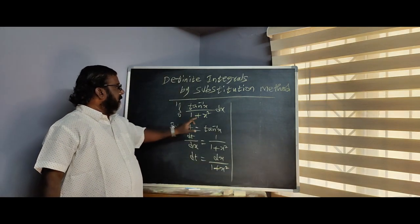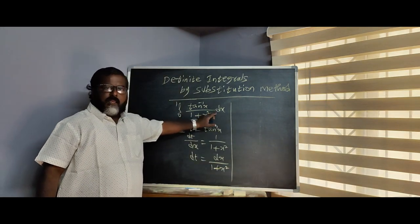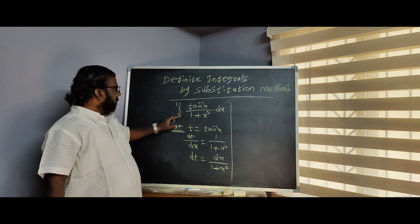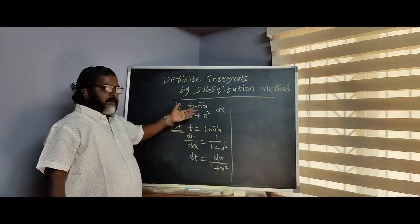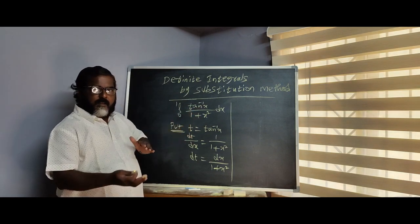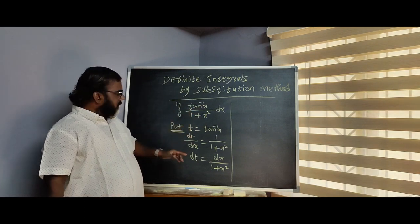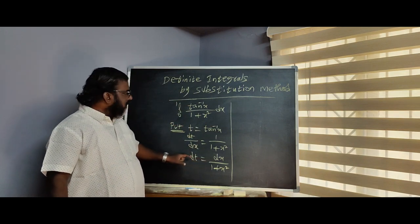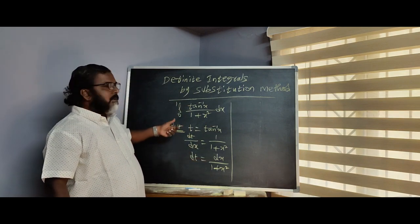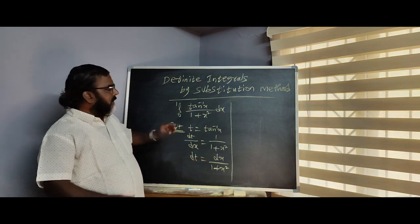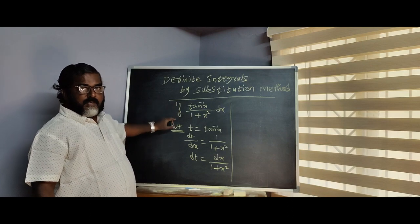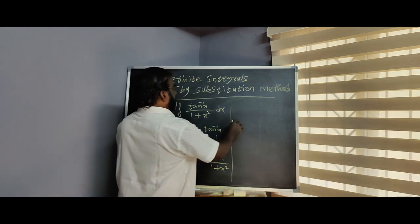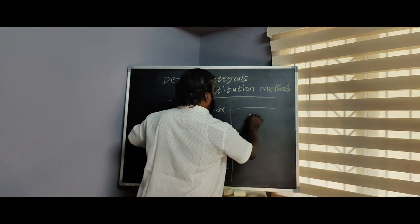The given limits are 0 to 1 in terms of x. Since we substituted x with t, we need to convert the x limits into t limits. We have to change the limits accordingly.